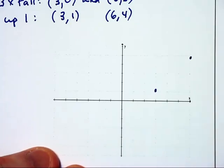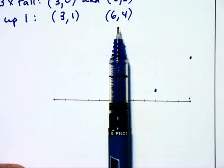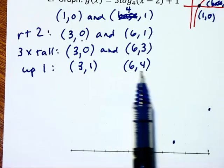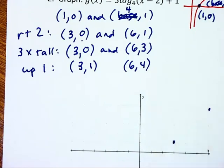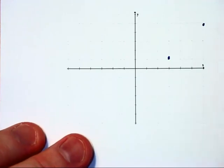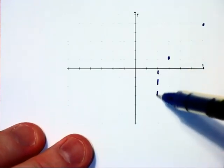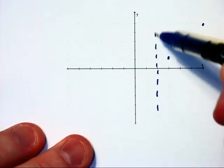Let's also look at what happens to the vertical asymptote. Normally you have a vertical asymptote on the y-axis. Our first transformation moves it over 2. 3 times tall does not affect a vertical line, nor does the up one. So we have a vertical asymptote at the line x equals 2. We can use these key points to draw our logarithmic graph.